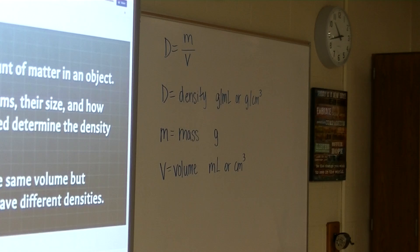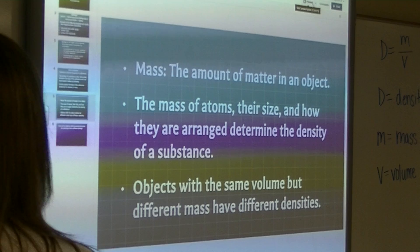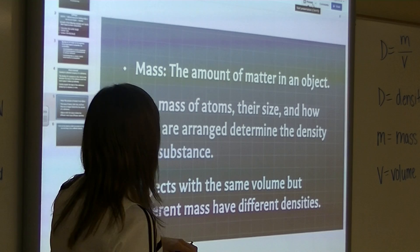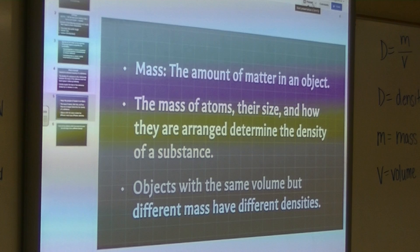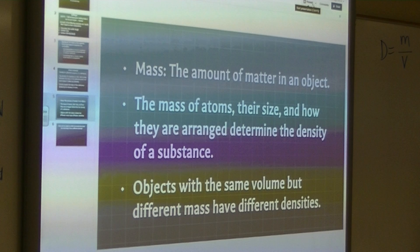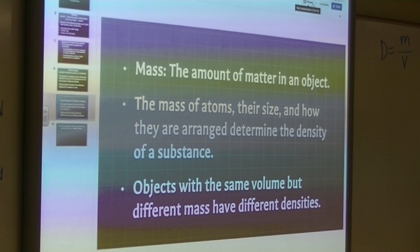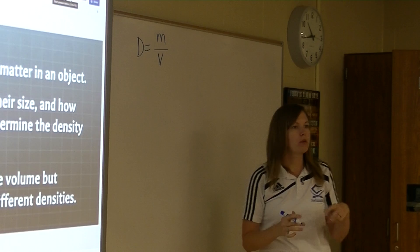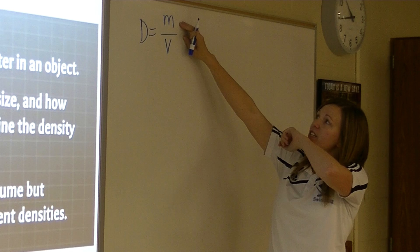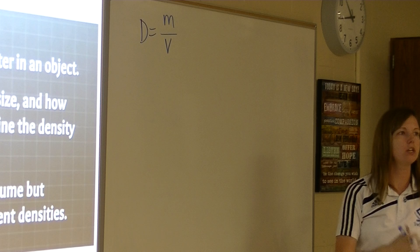So mass is the amount of matter in an object — make sure you have that written down. Now I'm going to give you the three formulas for density. The first one we already talked about: density equals mass over volume. If the problem asks you to solve for density, this is what you're going to use. But there are two other things we could be asked to solve for — they could ask us to solve for mass, or they could ask us to solve for volume. They're going to give you two pieces of information, and you're going to calculate the third.